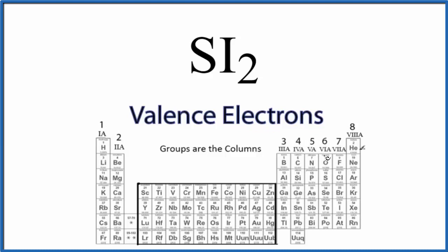We have group 6 here, 6a, sometimes called 16. Here's sulfur, 6 valence electrons.